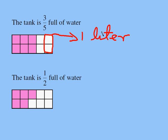Now, we are almost done. If this is 1 liter, the whole tank should be 1, 2, 3, 4, 5. The whole tank has to be 5 liters. That's my answer.